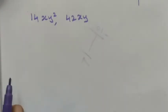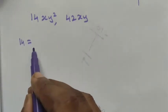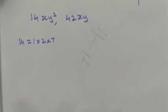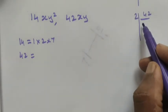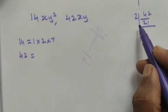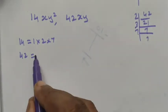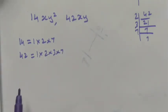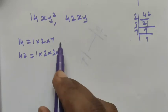Now we want to find the factors of these. 14 factorizes as 1 × 2 × 7. And 42, if we factorize using only prime factors: 2 × 3 × 7, so 42 = 1 × 2 × 3 × 7. We can write the 1 or we don't need to write it.